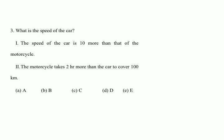Taking statement one alone — the speed of the car is 10 more than the motorcycle — you certainly cannot find the speed of the car from this alone. Statement two alone — the motorcycle takes two more hours than the car to cover 100 kilometers — again gives no chance of finding the speed of the car on its own. However, looking at the problem, if you take both statements together it looks likely you can get the answer, but we can't be sure without at least some calculation.